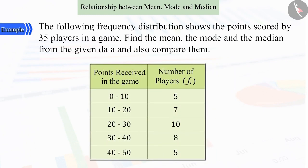The following frequency distribution represents the points scored by 35 players in a game. Find the mean, the mode and the median from the given data, and also compare them.